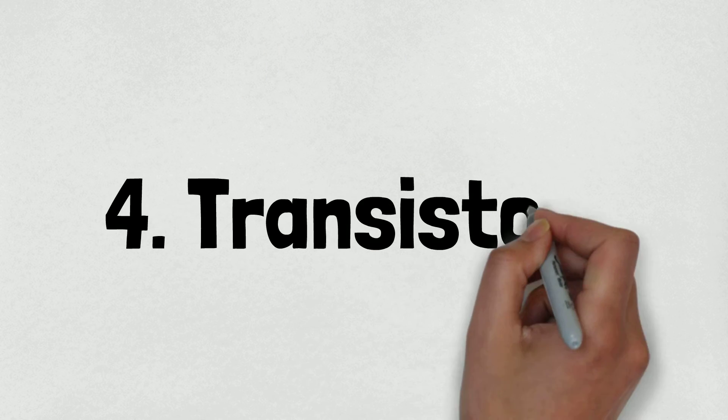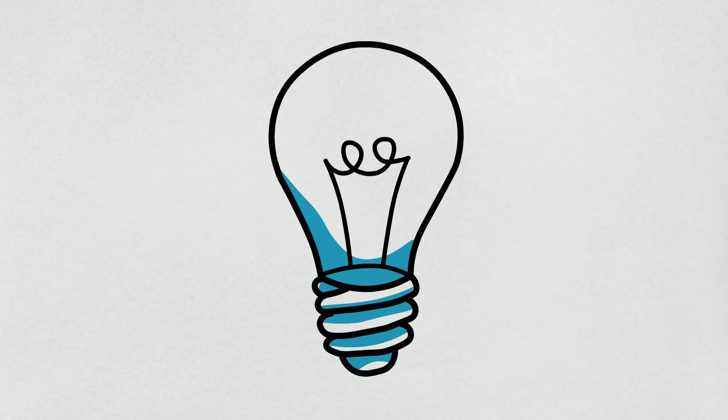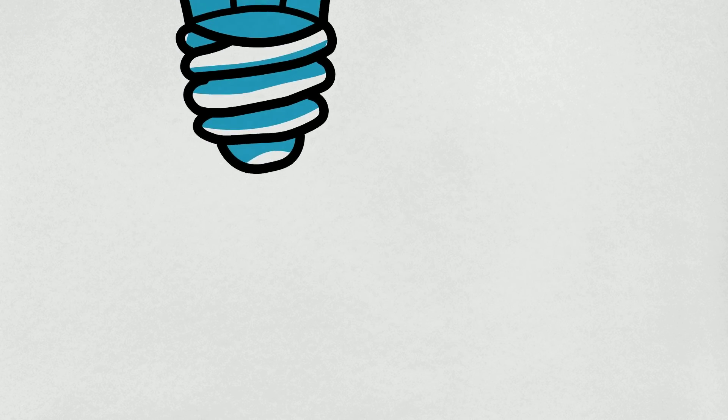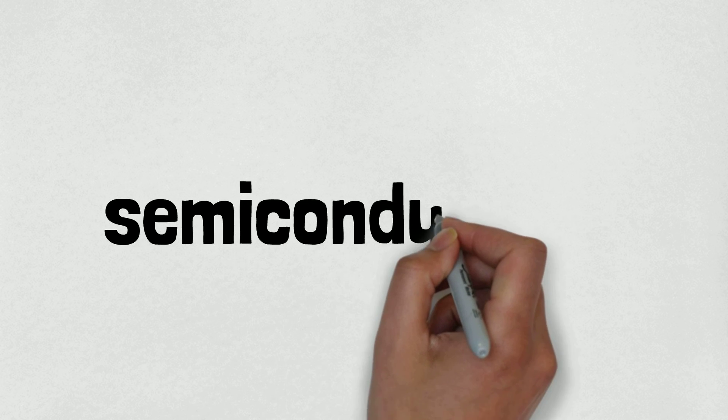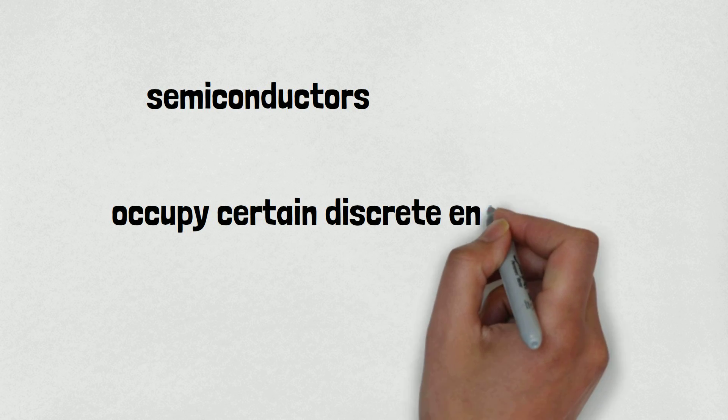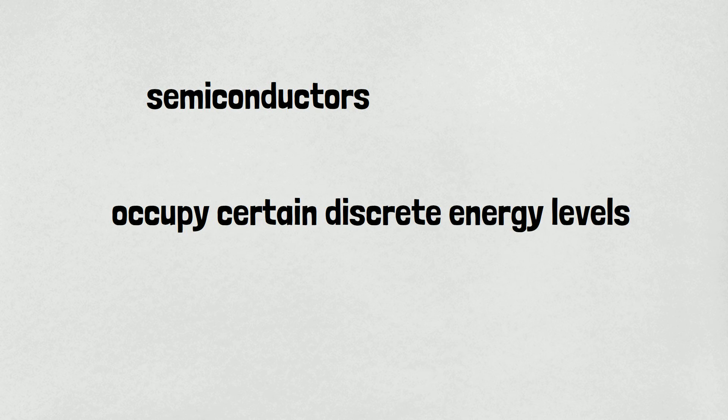Number 4 is Transistors. The basic part of the computer is a transistor, a switch which basically can be either off or on just like an electric switch at your home. Transistors are fabricated from materials known as semiconductors, in which charge-carrying electrons are only allowed to occupy certain discrete energy levels, as determined by quantum physics.